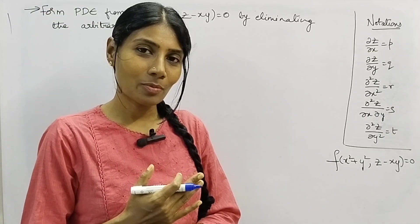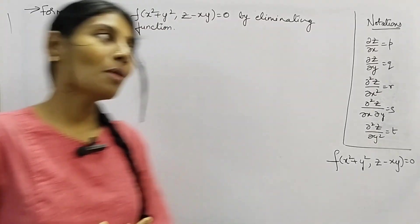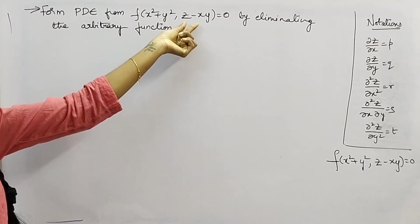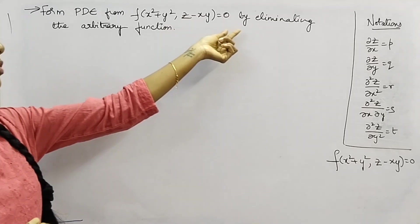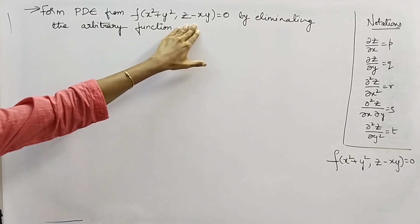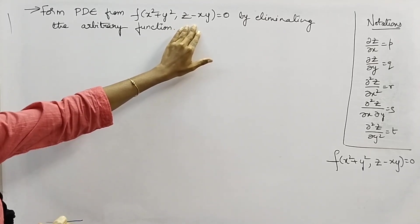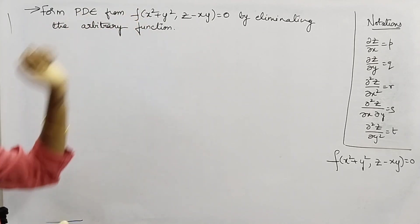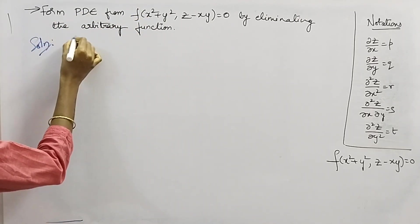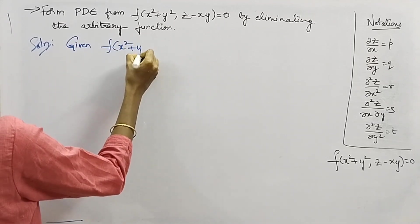Hello everyone, this is Jay Kalpana here. In this video we're going to see a problem from partial differential equations. The problem is: form a partial differential equation from f(x² + y², z − xy) = 0 by eliminating the arbitrary function. We are given this relation and asked to form a partial differential equation.